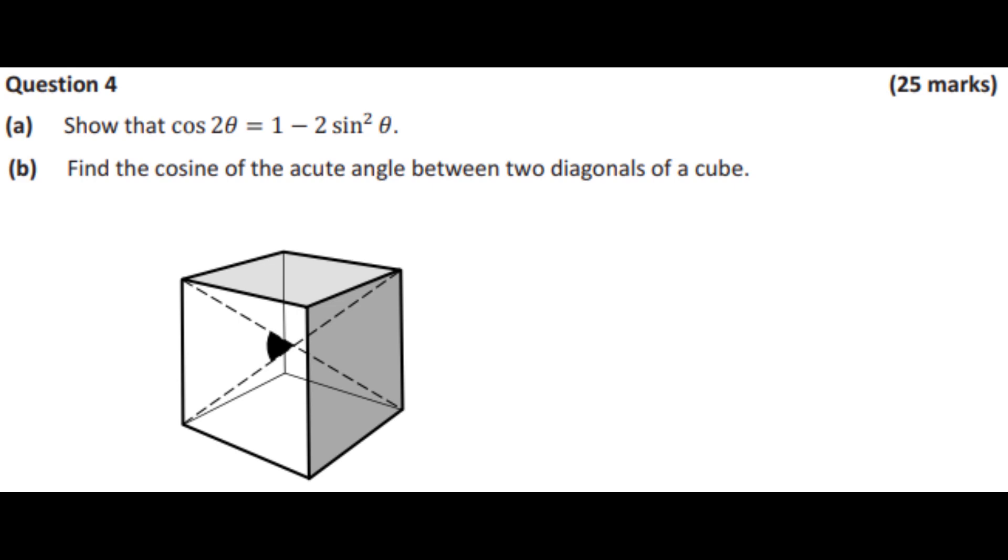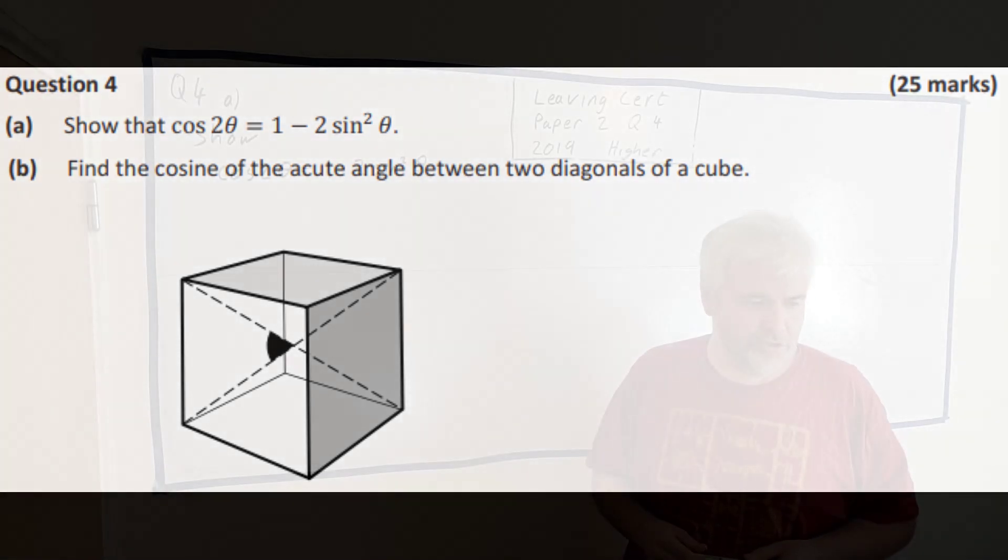This is question 4 of the 2019 higher level Leaving Certificate paper. It's made up of two parts. We have part A: show that the cosine of 2 theta is equal to 1 minus 2 sine squared theta, and part B they're asking us to find the angle inside this cube.